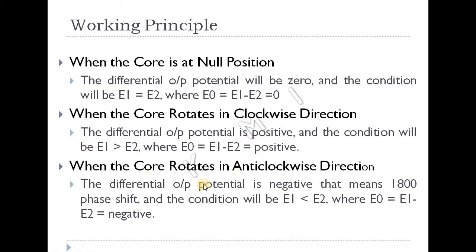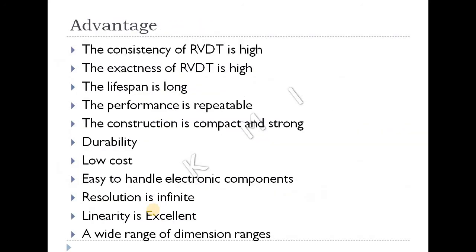When the core rotates anti-clockwise, E1 is less than E2, therefore E0 is negative. So clockwise rotation gives a positive output and anti-clockwise gives a negative output, with the central position being null. This is analogous to LVDT where the central core is null, upward movement is positive, and downward is negative. That is the working principle.